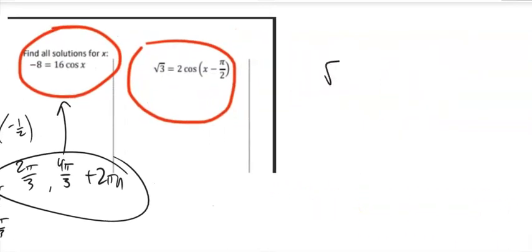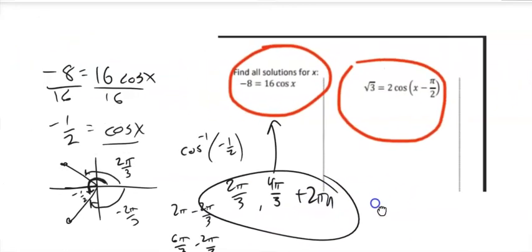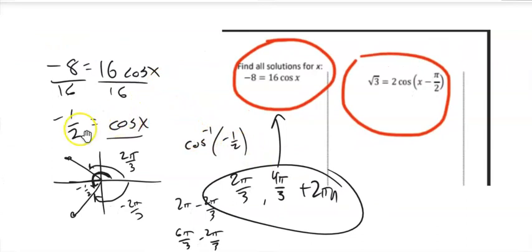Now this next one, root 3 equals 2 cosine of x minus pi over 2. Notice on this last one, what I did was I tried to get cosine alone, and then I'd inverse cosine, and I found both angles. I'm going to do the same thing with this one.